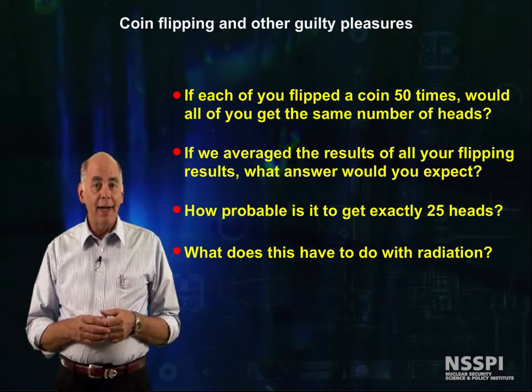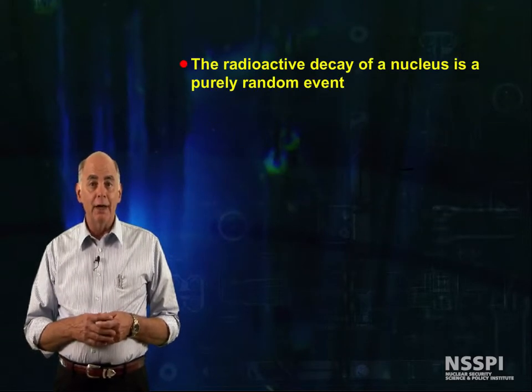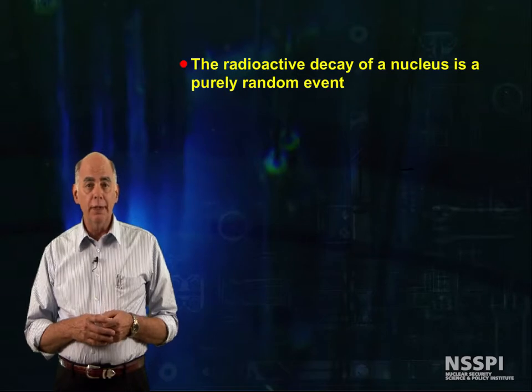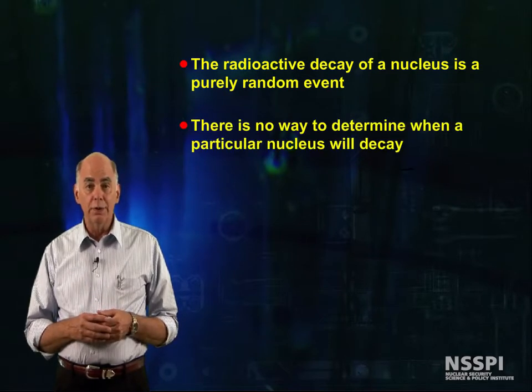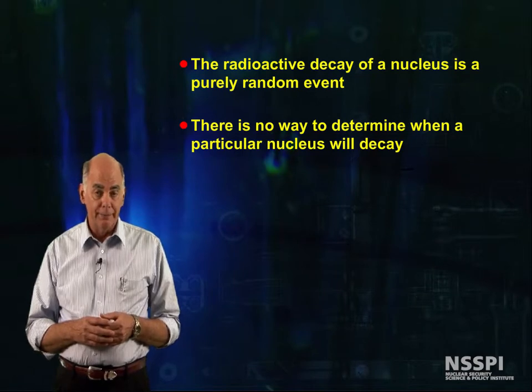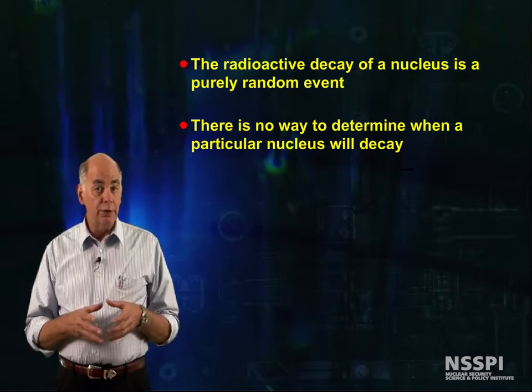Actually, it's not a bad analogy to compare coin flipping to radioactive decay. Radioactive decay of a nucleus is a purely random event. There is no way to determine when a particular nucleus will decay. On the other hand, we can say quite a lot about groups of nuclei.